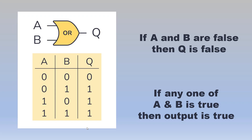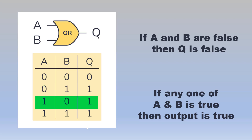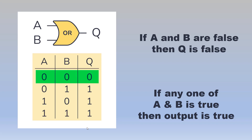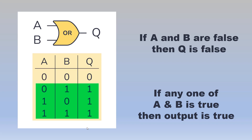Similarly we can talk about the OR gate. The OR gate has two inputs A and B and an output Q. The possible combinations 00, 01, 10 and 11 are shown. For 00 the output is 0, for 01 the output is 1, for 10 the output is 1, and for 11 the output is 1. So if A and B are both false then only the output is false. If any one of the inputs A or B is true then the output is true.